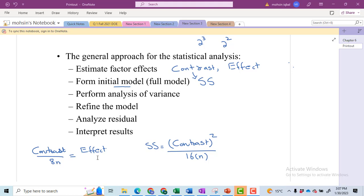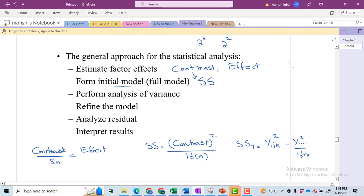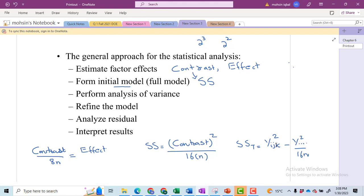After computing the effect, we will again use this contrast term to calculate the sum of squares. The formula for the sum of squares is contrast whole square divided by 16n. Again, n is the number of replications. In order to calculate the sum of squares of total, the formula is y_ijk whole square minus y quadruple dot whole square divided by 16n. So this is the formula for the sum of squares total.